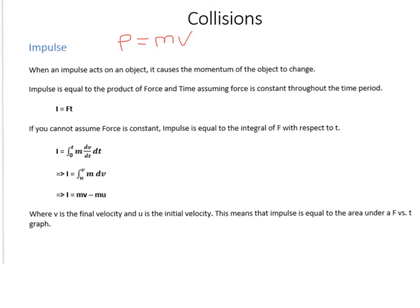And this is a vector quantity because it's made up of a constant and another vector, your velocity. So your momentum needs to have both direction and also magnitude.